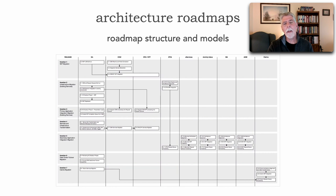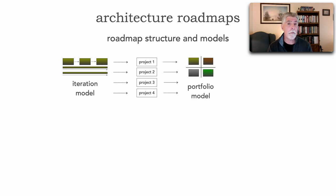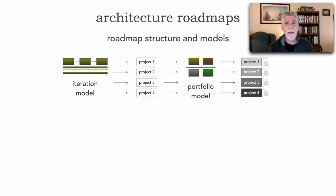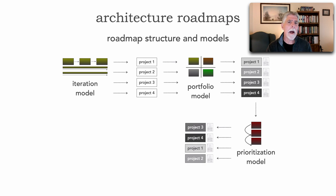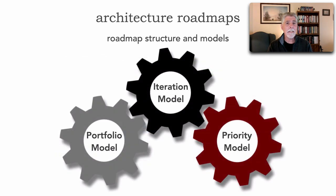In lesson 96 we took a look at the introduction of a roadmap and found that it really consists of three main models: the iteration model which we looked at in lesson 97, which produces projects that are fed into the portfolio model which quantifies and qualifies those projects as well as documentation, and those get sent to a prioritization model which reprioritizes projects based on needs, staffing, money, etc., ultimately producing the consolidated view. All three of these models are not independent but work together in a synergistic way to create the roadmap — that's the complexity involved with road mapping.